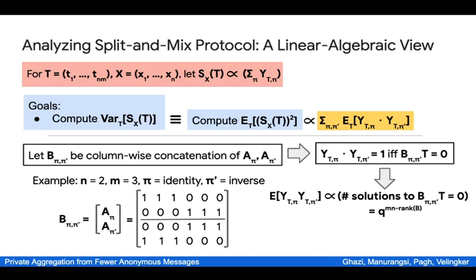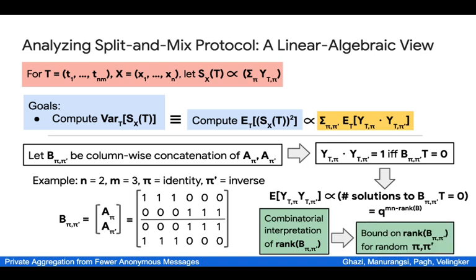This rank bound implies the bound on the variance of the random variable, which is the last ingredient needed to apply the Chebyshev inequality. This concludes the proof outline for our improved algorithm.